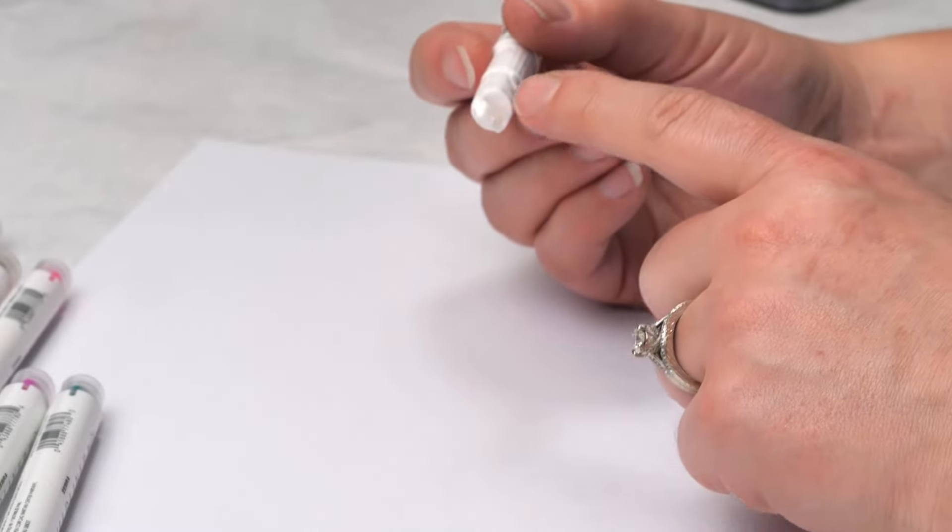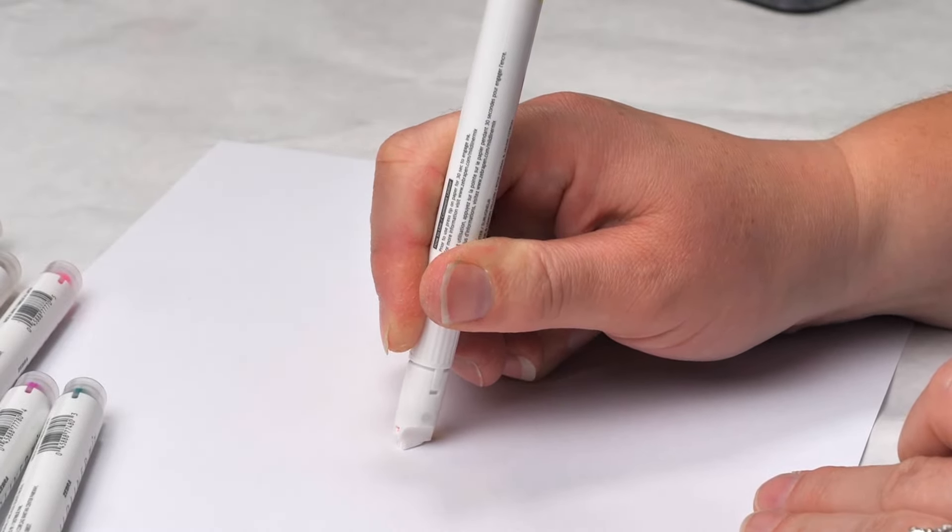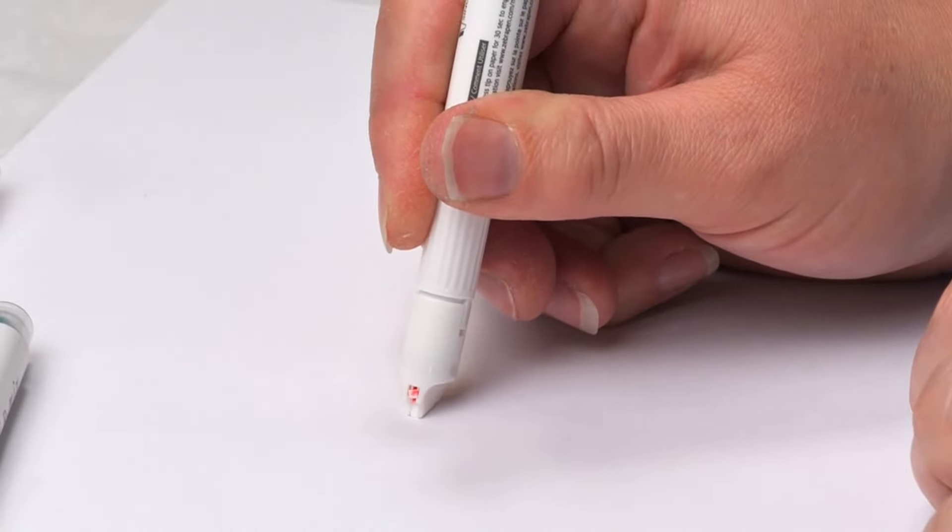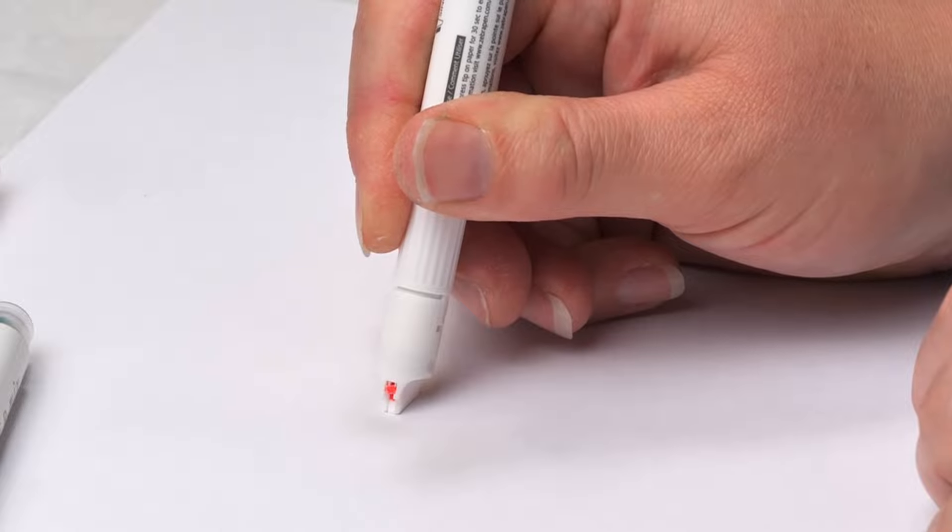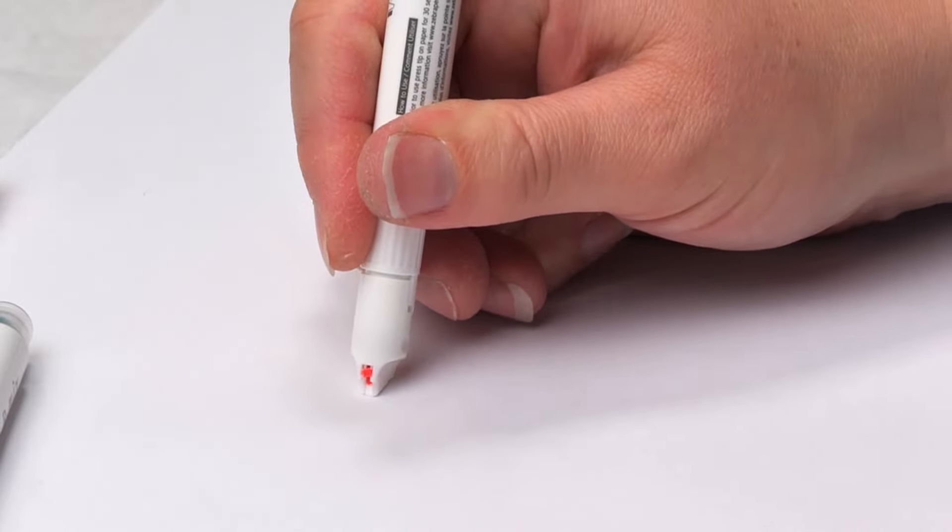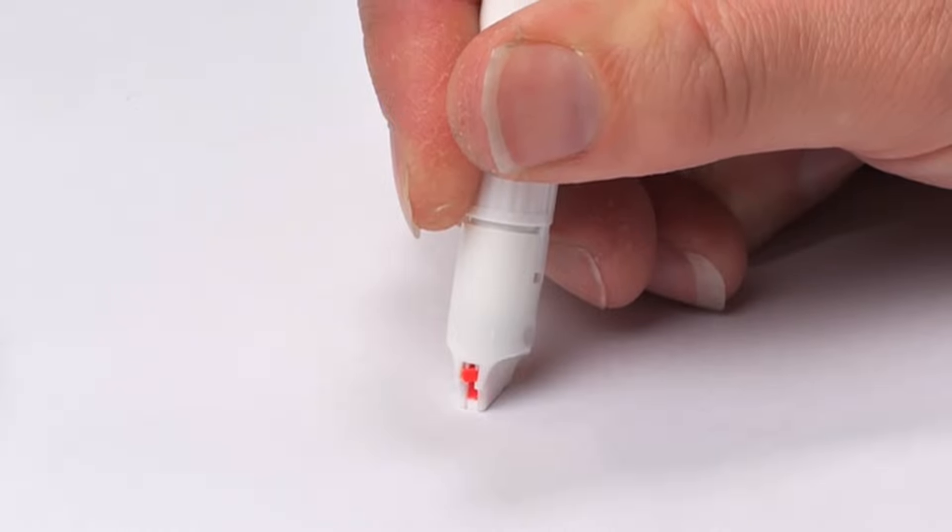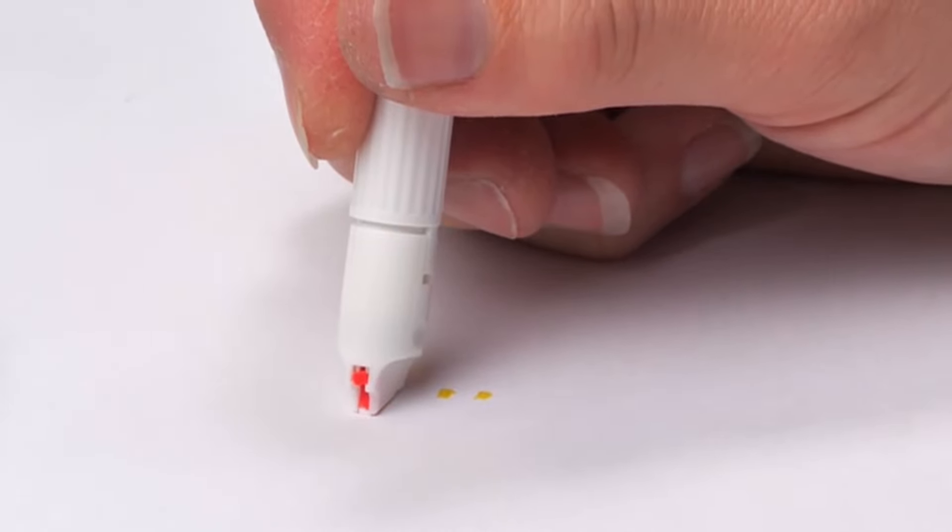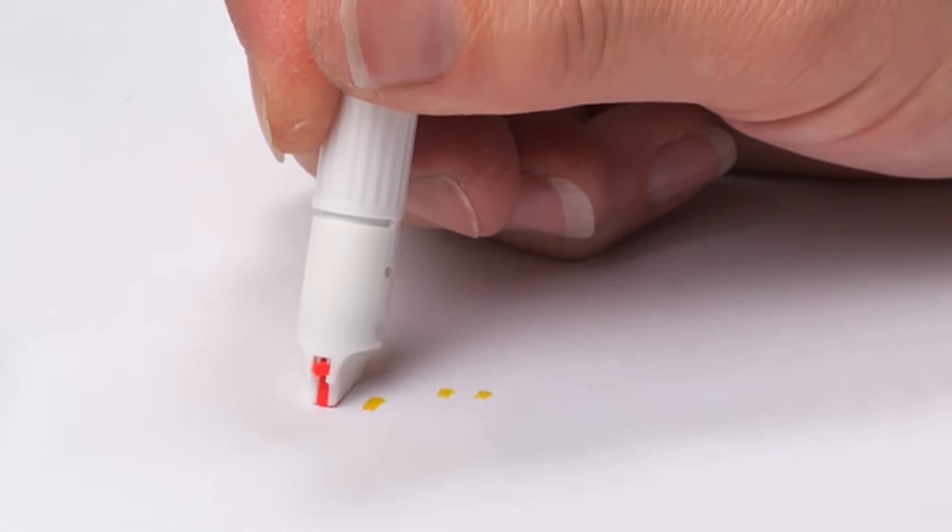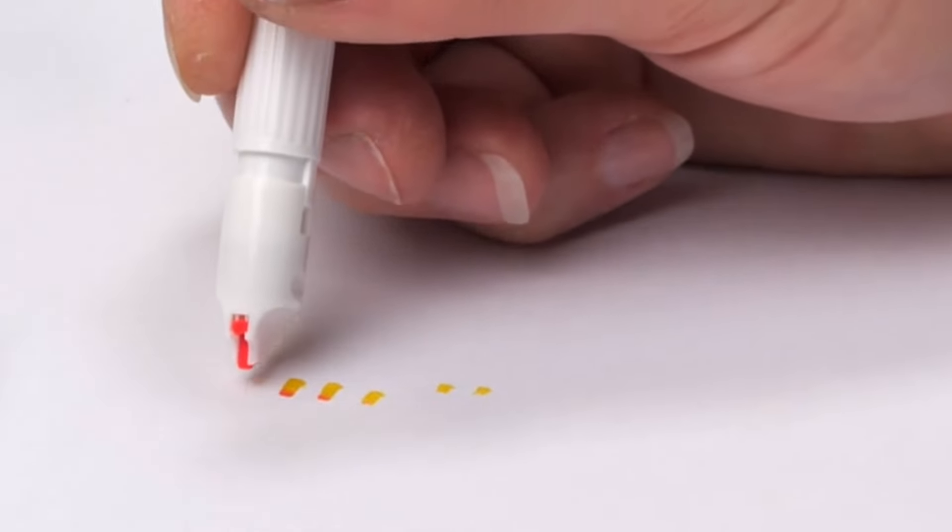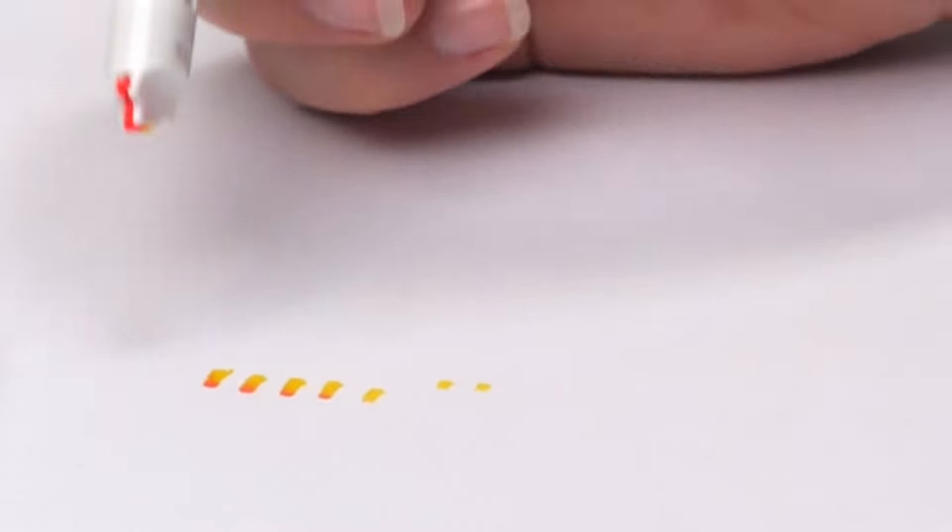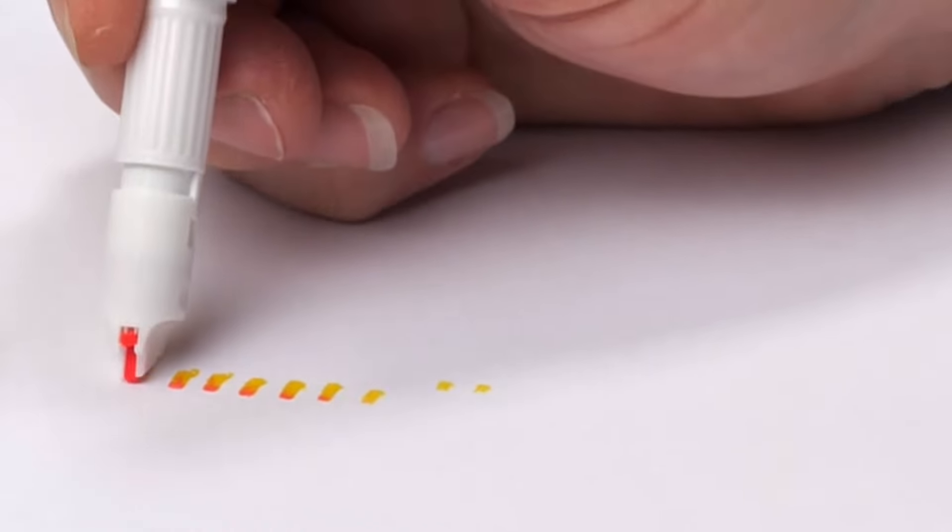So when you first get these, you're going to notice that you have a white tip. It's not going to have any color coming from it, so this is where you need to press down and you'll notice that the first press, I have a tiny little bit of color that's going to come down. So the key with this is you've got to press these a bit just to help the color work its way down. So we're starting to get little bits of the yellow.